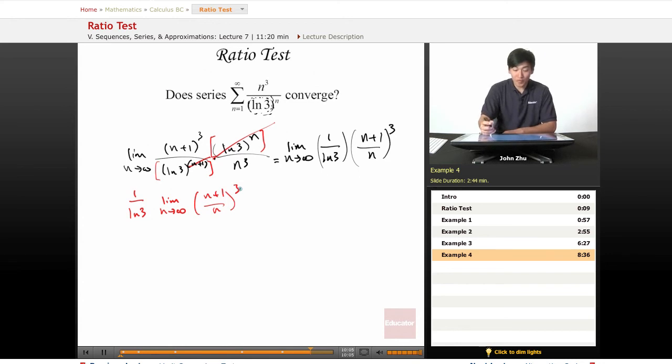And from before, we know that this term equals 1 plus 1 over n. So this limit equals 1 over ln of 3 times 1. So we have 1 over ln of 3, which equals approximately 0.91.